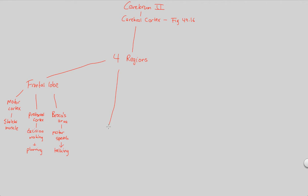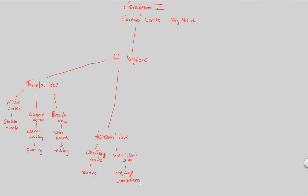In addition to the frontal lobe, there's also the temporal lobe. The temporal lobe contains two important structures: the auditory cortex, which is in charge of hearing, and Wernicke's area — named after the person who discovered it, also covered in many psychology courses. Wernicke's area is in charge of language comprehension. Students often confuse the two: Wernicke's is understanding speech, and Broca's is producing speech.